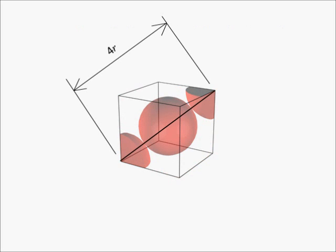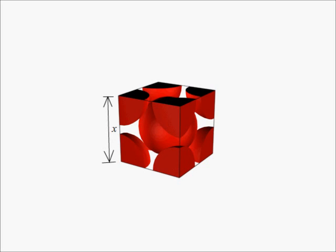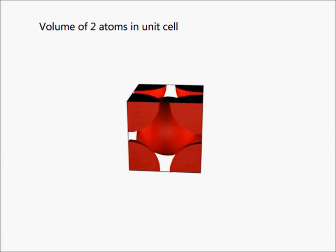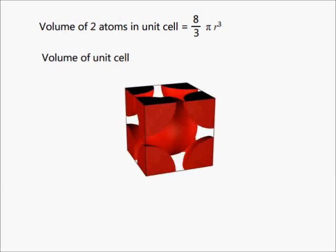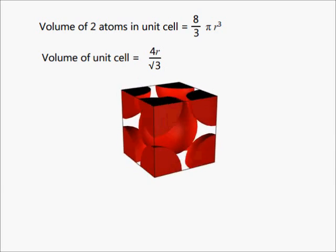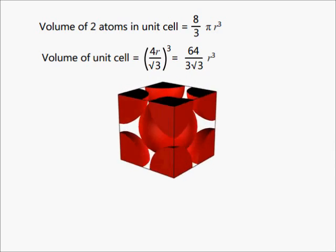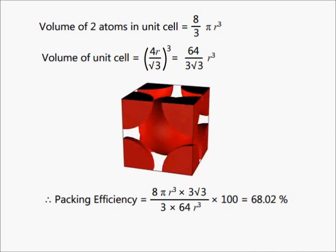The diagonal of the cube is equal to 4r. If the edge length is x, then the face diagonal is equal to √2 × x, and the cube diagonal is equal to √3 × x, giving x = 4r / √3. Therefore, volume of the unit cell is equal to (4r/√3)³, which equals 64/3√3 r³. Therefore, packing efficiency is equal to 68.02%.